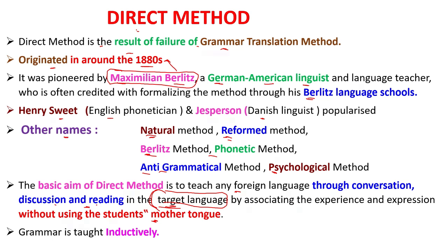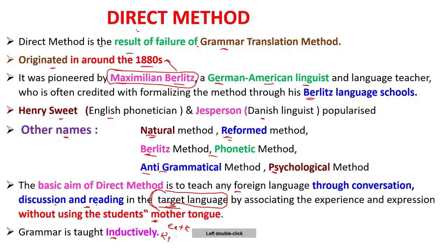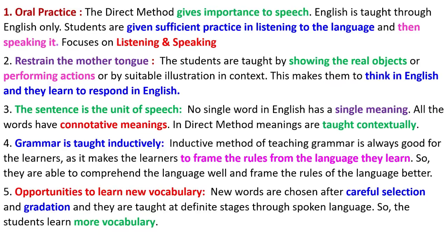Here, grammar is taught inductively. Inductively means examples first and then rules. But in grammar translation method, it is rules first and then examples. In direct method, examples come first and rules come next — this is called the inductive method.